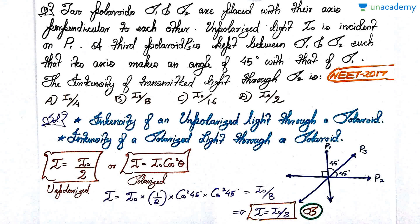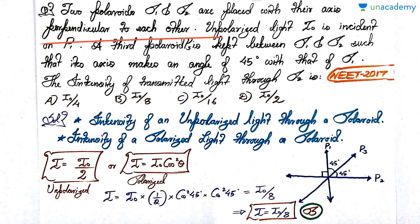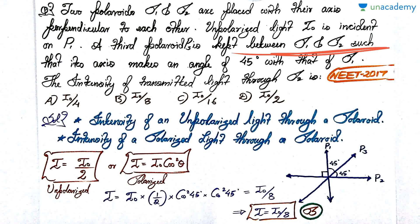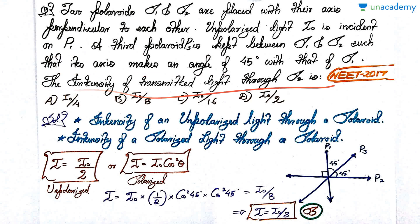The first question is based on polarization, asked in NEET 2017. Two polaroids P1 and P2 are placed with their axes perpendicular to each other. Unpolarized light of intensity I₀ is incident on P1. A third polaroid P3 is kept between P1 and P2 such that its axis makes an angle of 45 degrees with that of P1. The intensity of the transmitted light through P2 is — options are I₀/4, I₀/8, I₀/16, and I₀/2.